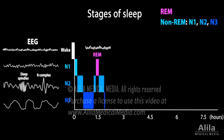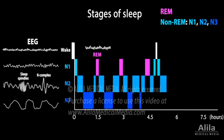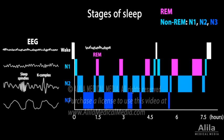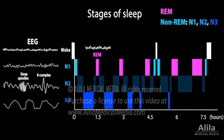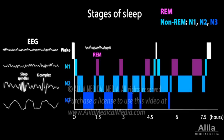This sequence of stages repeats itself four to five times in a typical night. As the night progresses, the duration of N2 and REM sleep increases while N3 decreases.